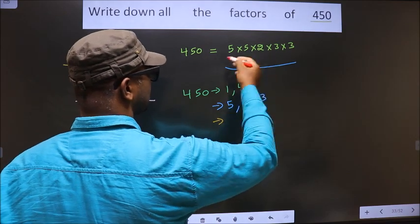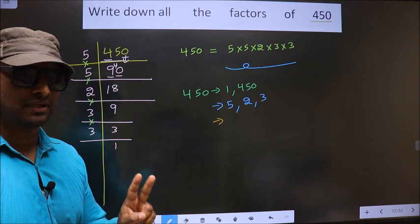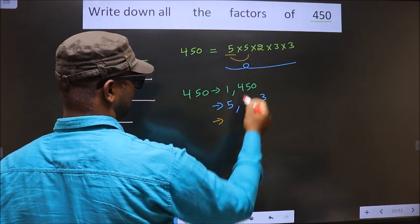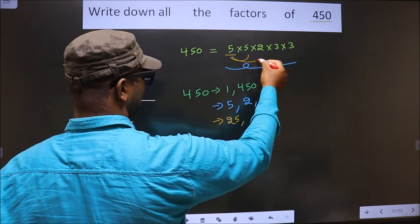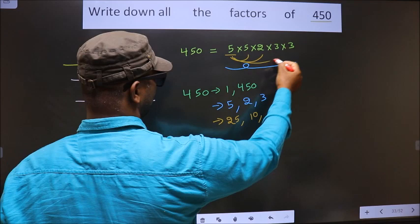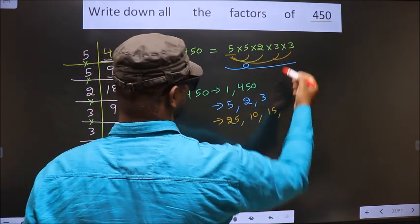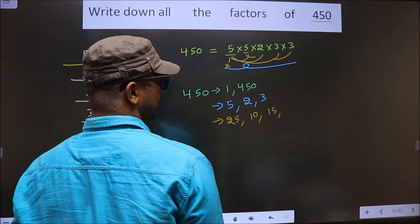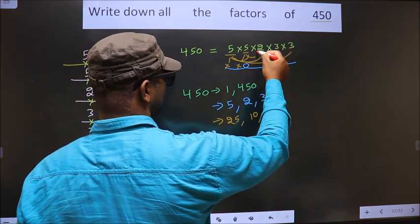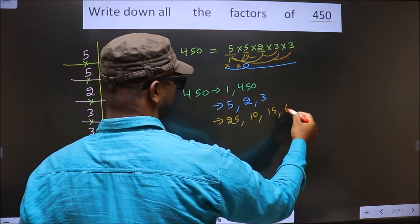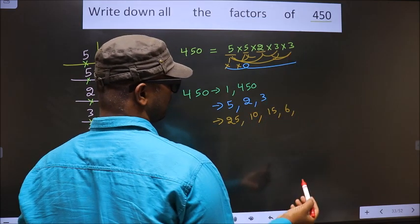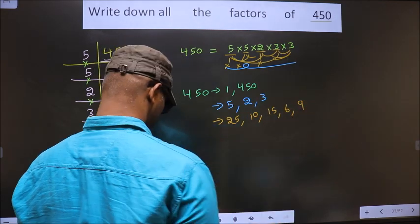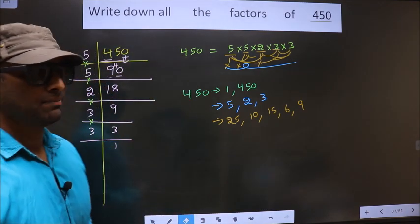Now you take a combination of two numbers. First I fix 5 and combine with the other 5 — I get 25. Combine with 2 — we get 10. Combine with 3 — I get 15. Now fix 2 and combine with 3 — 2 × 3 gives 6. Now fix 3 and combine with 3 — 3 × 3 is 9. No more combinations possible.